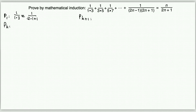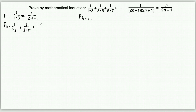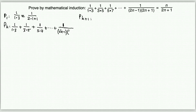We'll verify P(1) later. The P(k) statement is the same as P(n) except we substitute n with k: 1/(1·3) + 1/(3·5) + 1/(5·7) + ... + 1/((2k-1)(2k+1)) = k/(2k+1).